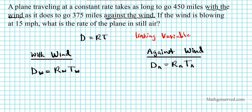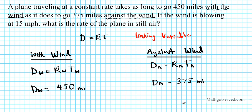Let's start with distance. The distance with the wind, D_W, is 450 miles. And the distance against the wind is 375 miles. We can see that these two values are different, so distance is not the linking variable. It makes sense that you travel farther with the wind because you're traveling faster, and a shorter distance against the wind because you're traveling slower.